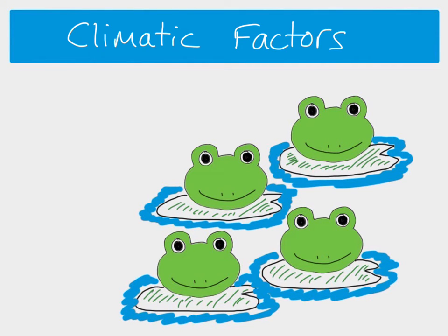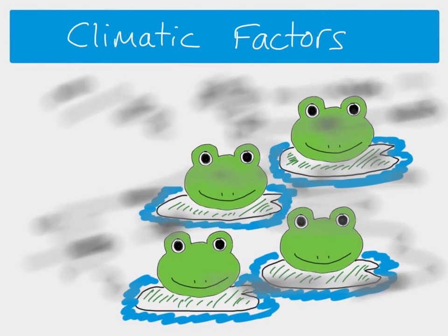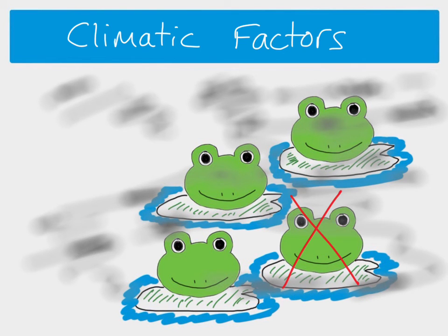Other things that can be selection pressures are climatic factors. I've picked frogs as an example because amphibians are very sensitive to changes in pollution, as they absorb gases through their moist skin. If we see an increase in air pollution in their environment, that could have a very negative effect on our frogs and some of them are going to die. Maybe the surviving frogs have a slightly better immune response or a better ability to metabolise toxins, but for some reason this frog has less advantageous characteristics when it comes to a change in pollution levels.